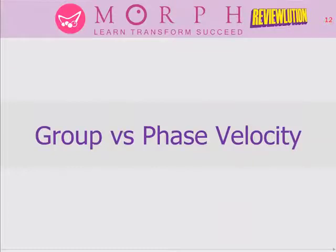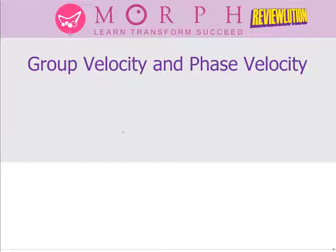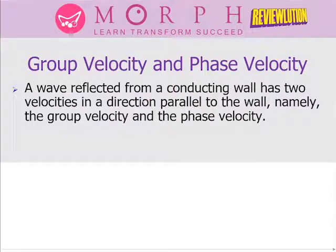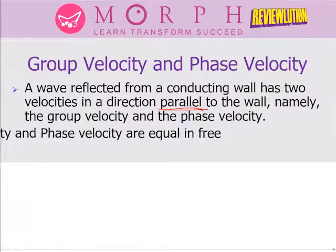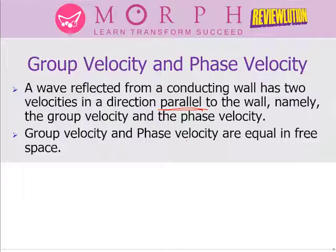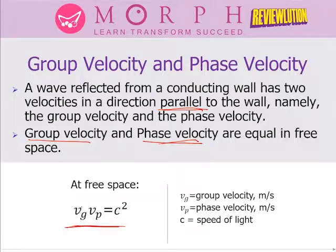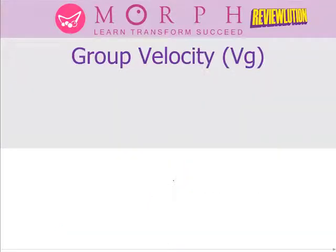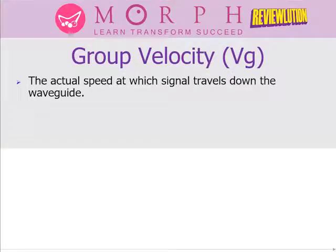Now let's look at group velocity and phase velocity inside the waveguide. The wave reflected from the conducting wall has two velocity components: group velocity and phase velocity. In free space, group velocity equals phase velocity, both equal to 3×10⁸ m/s, so their product equals C². But inside the waveguide, these two velocities are no longer equal.